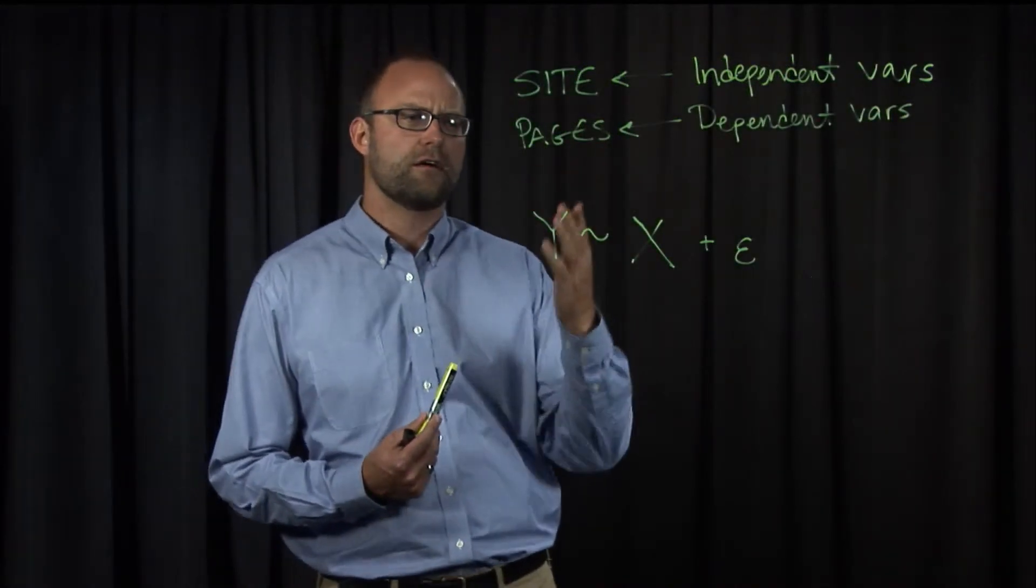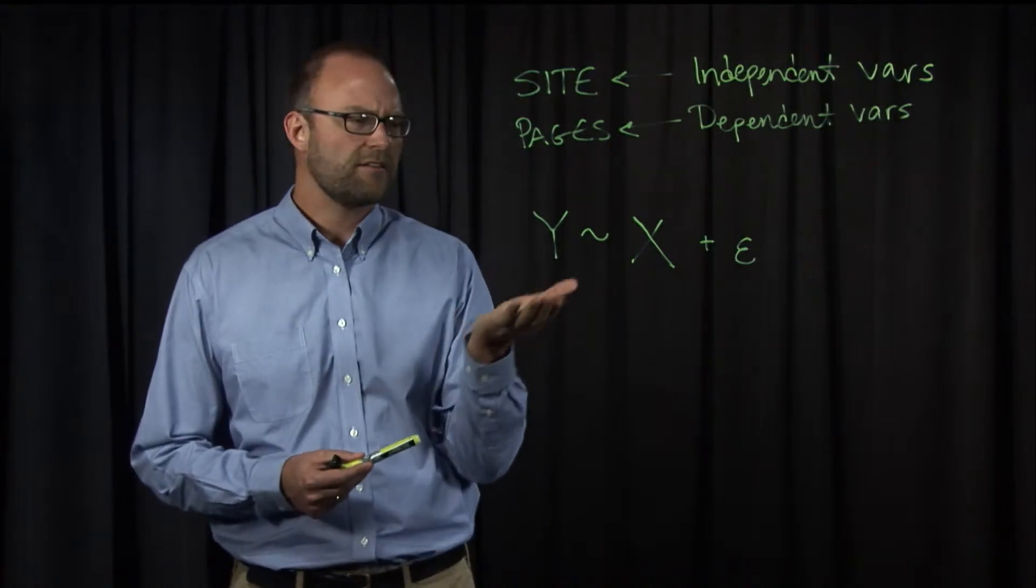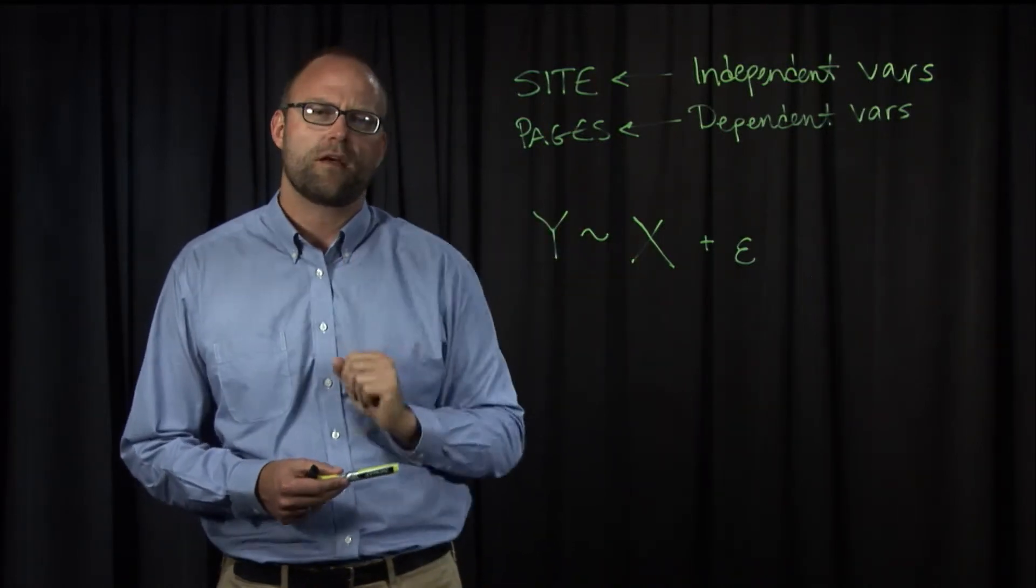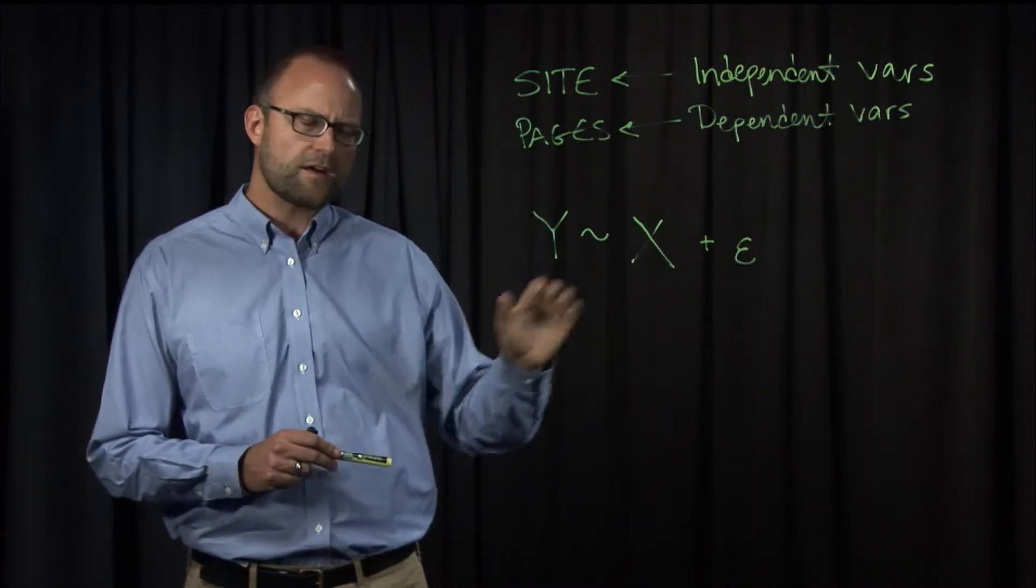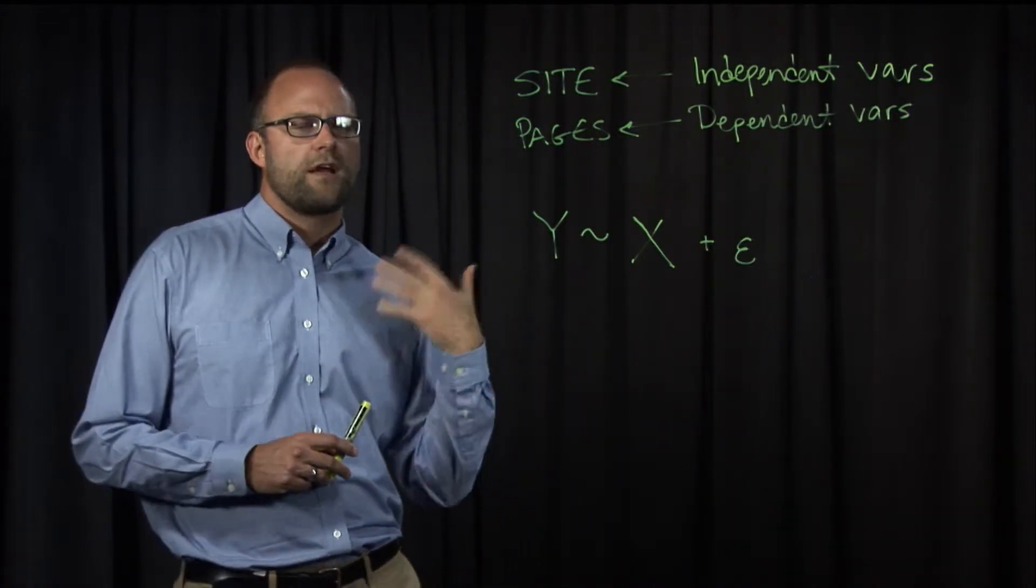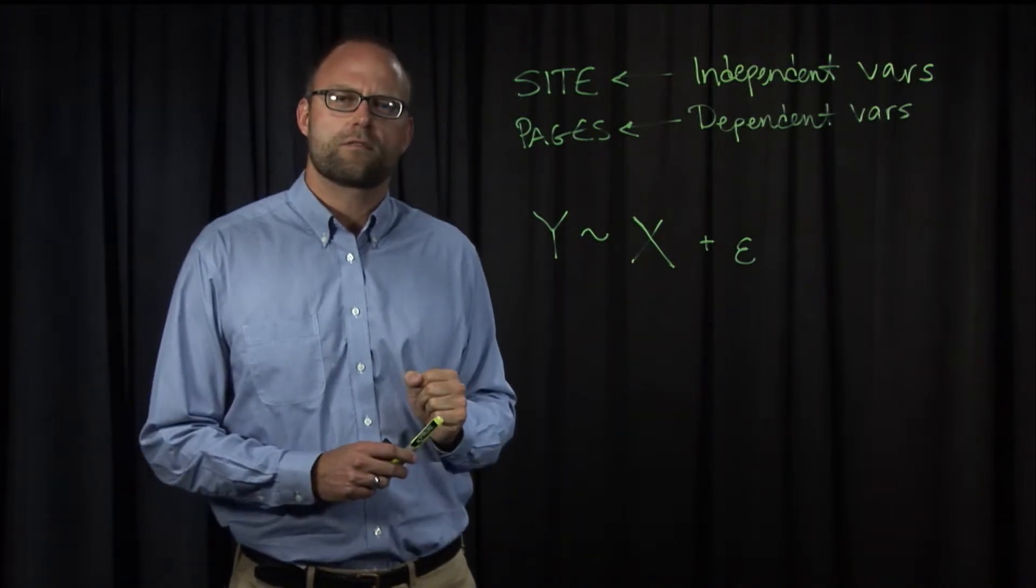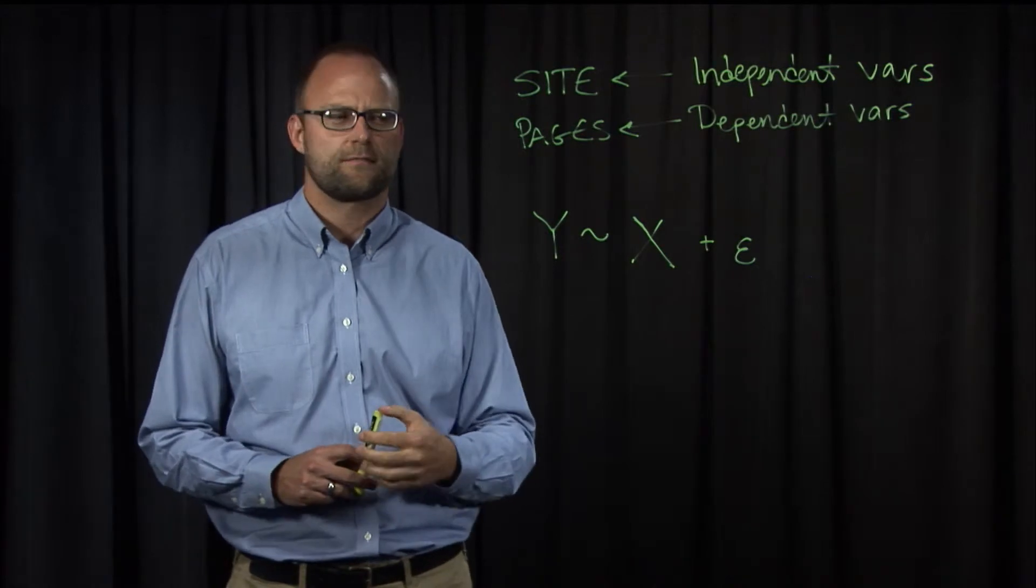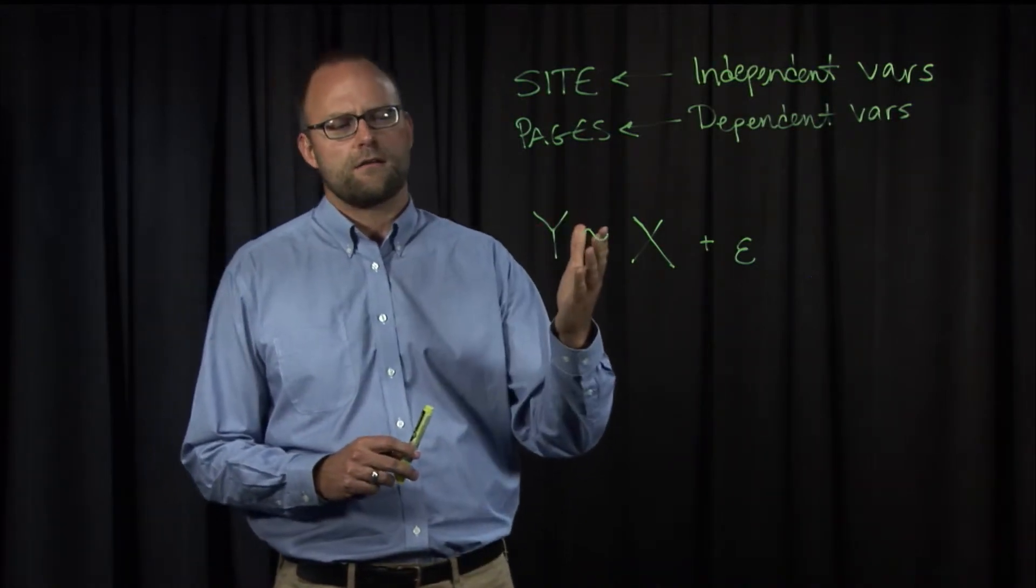The idea here, in our case, would be that the number of pages viewed, we think, might depend on the value that X takes. Is X website A or B plus measurement error? What's measurement error? Well, this is actually a very deep issue. But you can think of it as the random error or noise that's in the measurements that we're taking over people, over subjects, for this experiment.